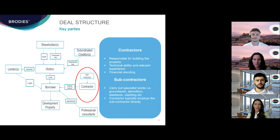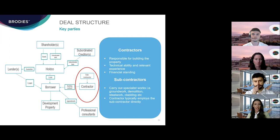The borrower will appoint a development team, which generally consists first of all of the contractors. The contractor or builder is the party principally responsible for building the property — this might also include demolition and remediation work on the site. The contractor will enter into a building contract with the borrower setting out the nature and extent of the building contractor's role, and also the requirements for the particular works. The contractor may implement the design produced by the developer, or may take on elements of the design work itself, known as design and build.